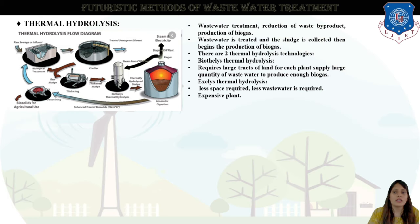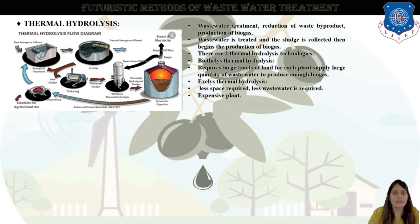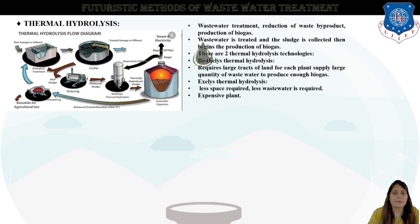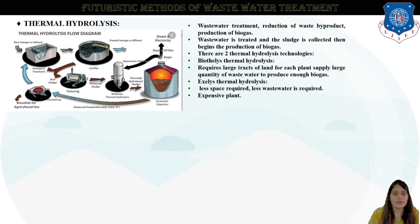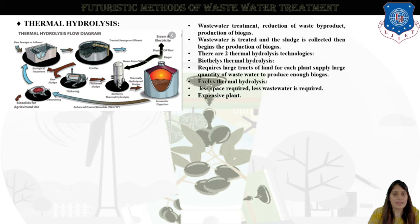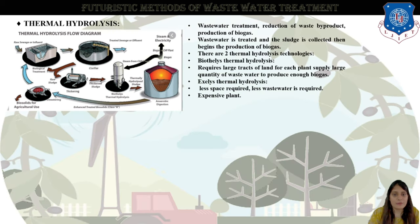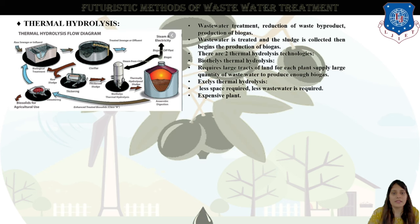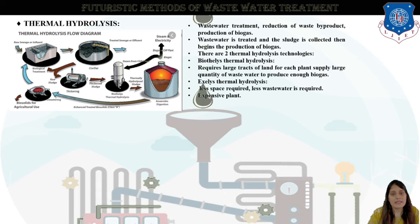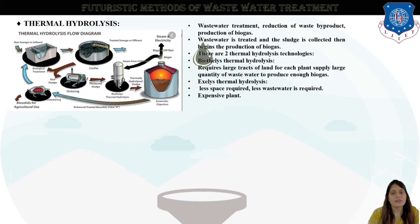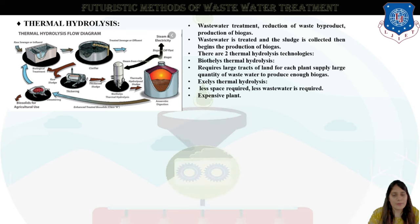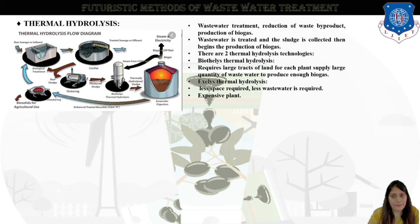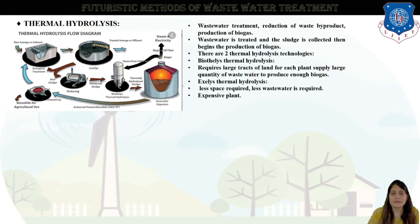Next we are going to look at futuristic methods of wastewater treatment. The first method is the thermal hydrolysis process — it achieves reduction of waste byproducts and production of biogas. Wastewater is treated, sludge is collected, and begins the production of biogas. There are two types: Biothelys thermal hydrolysis and Exelys thermal hydrolysis — two plant types to generate and produce biogas.